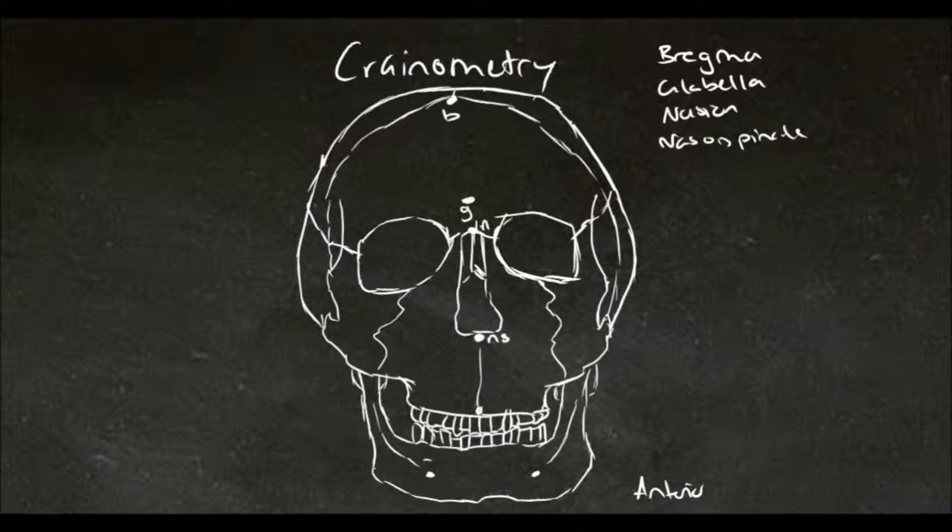The next one down is here and it is referred to as the prostheon and this indicates the most anterior point of the maxillary alveolar arch.